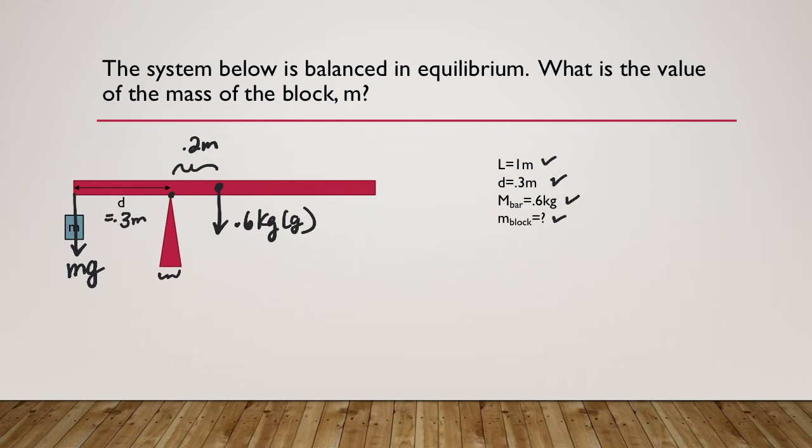Now there is one more force acting. I'm going to draw it in a different color, in red. That's the force of the pivot, the support force. I'll call it a normal force. That's just supporting the rod. We don't know what that is, but it's there, and it's important that we note it.